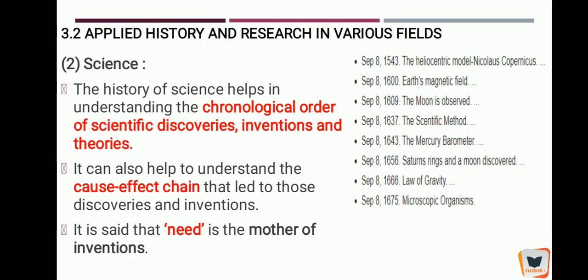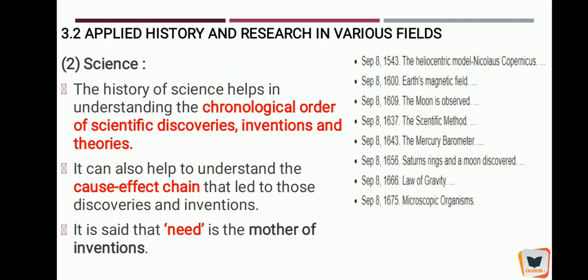Applied history is also very useful for science. The history of science helps in understanding the chronological order of scientific discoveries. Scientific discoveries have been happening since ancient times — we need to know when inventions happened, who wrote the theories, and how things were built. For example, mobile networks went from 2G to 3G, 4G, and now 5G — discoveries improve gradually. This is called the cause-effect chain.